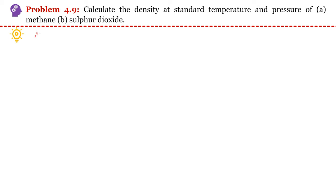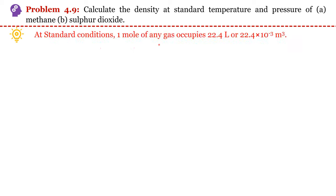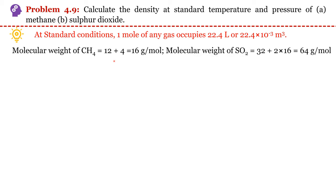We can take one mole as our basis and do the calculation. At standard conditions, one mole of any gas occupies 22.4 liters. Convert this liter to meter cube. We can write the molecular weight of CH4 and SO2, and this molecular weight will become the mass of CH4 and SO2 because we have started with one mole. Now we can estimate the density of CH4.